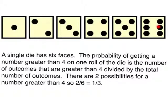So there are two possibilities for a number greater than 4. So 2 out of a possible 6, and that as a fraction reduces to 1 in 3. So you have a 1 in 3 chance of rolling a number greater than 4.